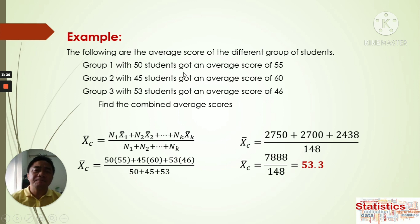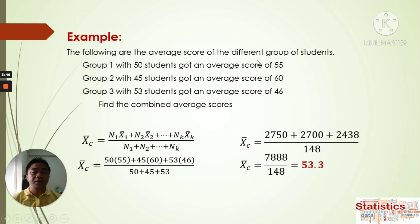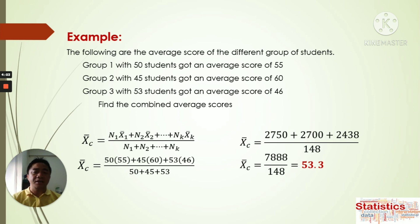For the combined arithmetic mean, we need the number of respondents — the value of n — and the average score for each group. You multiply them together so every student counts toward the overall average. I hope all of you understand this topic about the combined arithmetic mean. We will have a new topic about the measure of central tendency next time. See you, bye-bye!